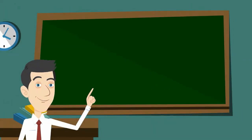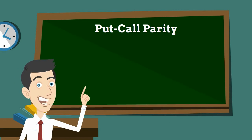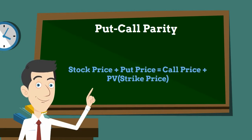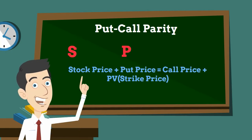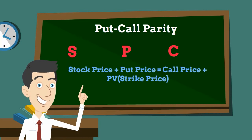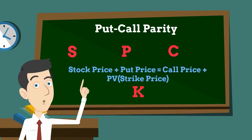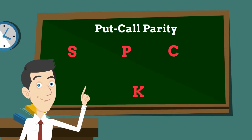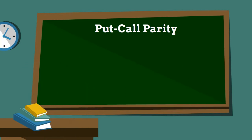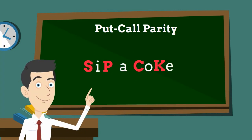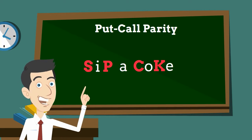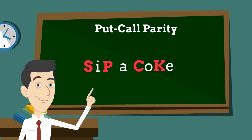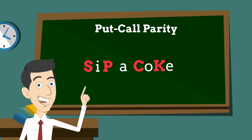Now let's go into the mnemonics. From left to right, we take the first letter of each instrument: S for stock price, P for put option, C for call option, and K for strike price. We incorporate all these letters into the catchy phrase 'SiP a CoKe.' The acronyms are incorporated into every other letter in the mnemonic — you get S, P, C, and K.